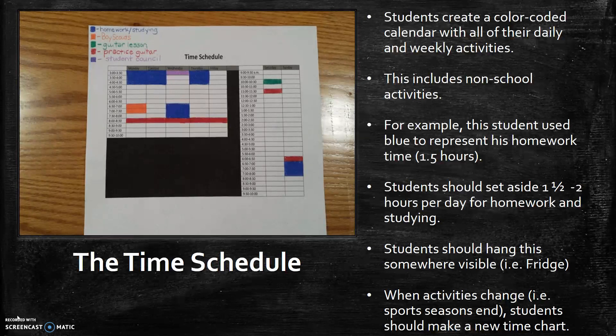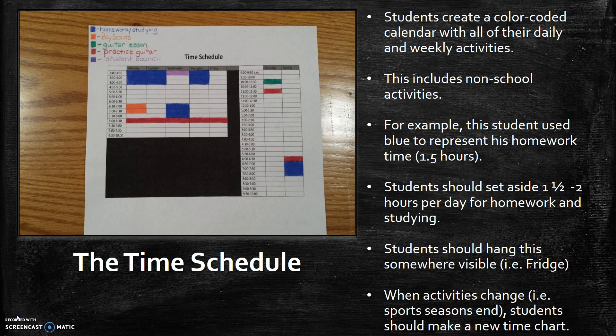Once he identified everything that he was involved in and created a color and colored it on the schedule, now we go back and look at where are we going to insert the time for homework. Now it depends on what student we're talking about. I'm a junior high teacher so I typically ask my students to set aside an hour and a half maybe two hours a day.